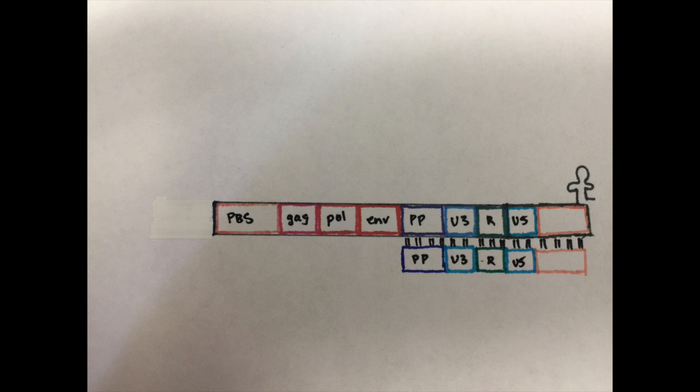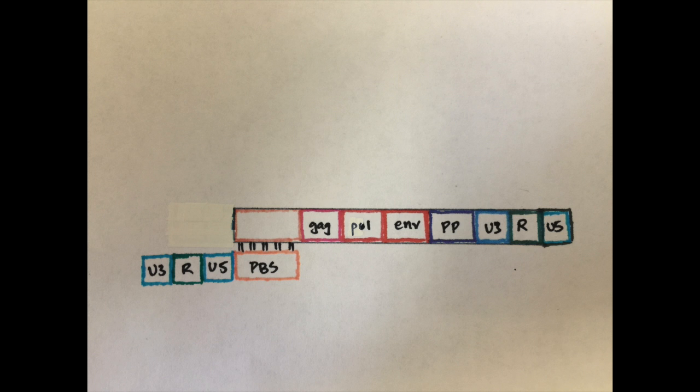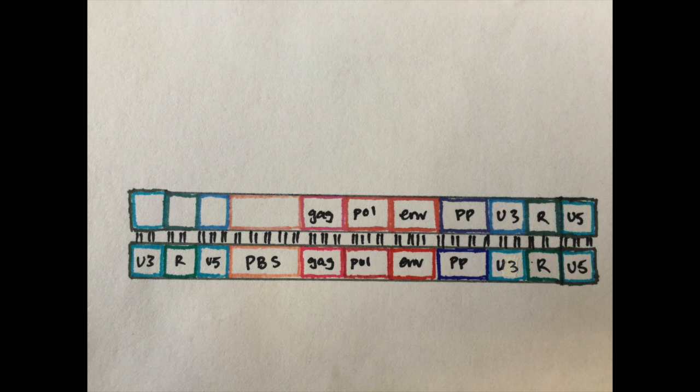There is then another jump where the PBS from the second strand hybridizes with the complementary PBS on the first strand. Both strands are extended further and can be incorporated into the host genome by the enzyme integrase.